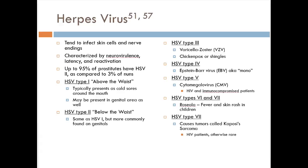HSV type 3 is varicella zoster — chickenpox or shingles. Type 4 is Epstein-Barr virus, also known as mono. Type 5 is cytomegalovirus (CMV), really only seen in heavily immunocompromised patients like those with advanced HIV. Types 6 and 7 — roseola is seen in children and is pretty benign with no real treatment. HSV type 8 is associated with Kaposi's sarcoma, another HIV-specific condition causing large purplish lesions in immunocompromised patients.